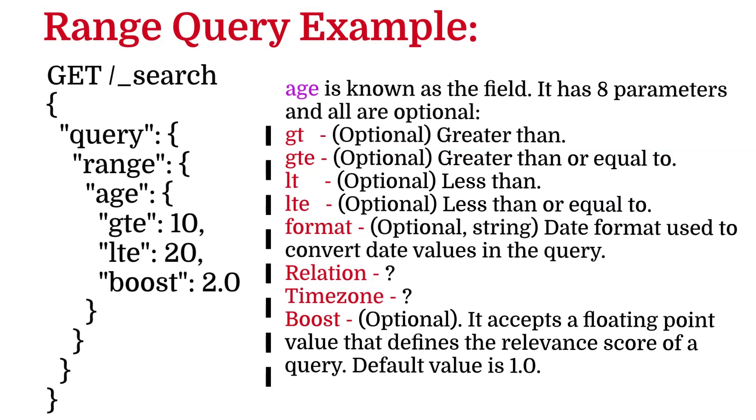The next option is relation. The next one is time zone. And the next one is boost. Again, boost is an optional parameter. It accepts a floating point value that defines the relevant score of a query. Default value is 1.0. If you want me to explain more about relation and time zone parameters, leave a comment because this is comparatively a difficult topic to cover and I would love to create a dedicated video of all these requested topics.